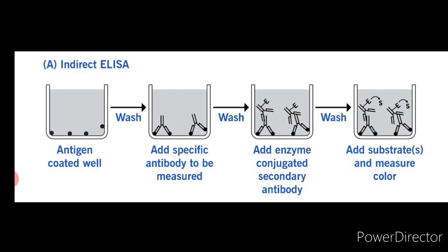Antibody can be detected or quantitatively determined with an indirect ELISA. A serum or other sample containing the antibody is applied to an antigen attached to a well and allowed to react. After any free primary antibody is washed away, the presence of antibody bound to the antigen is detected by adding an enzyme-conjugated secondary antibody, which binds to the primary antibody. Any free secondary antibody is then washed away and a substrate for the enzyme is added. The amount of colored reaction product formed is measured by specialized spectrophotometric plate readers, which can measure the absorbance of all wells of a 96-well plate in seconds.